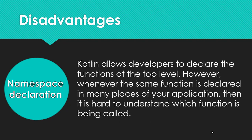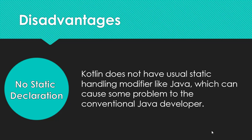Now we are going to discuss the disadvantages of Kotlin. The first disadvantage is namespace declaration. Kotlin allows developers to declare functions at the top level. However, whenever the same function is declared in many places of your application, it is hard to understand which function is being called. The next point is no static declaration: Kotlin does not have the usual static handling modifier like Java, which can cause some problems to conventional Java developers. These are the advantages and disadvantages of Kotlin programming.